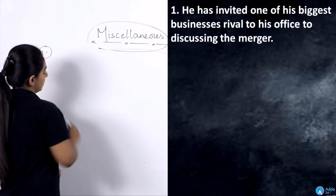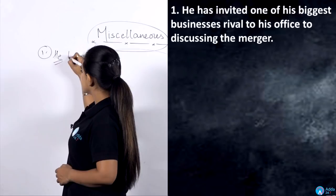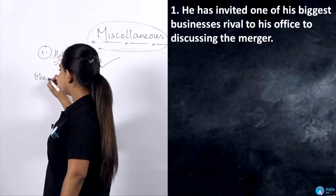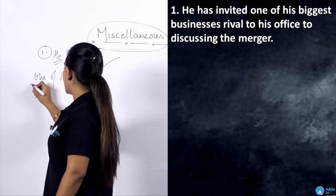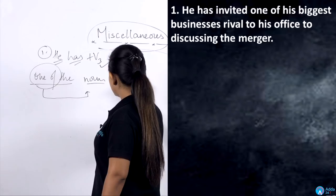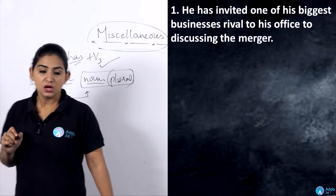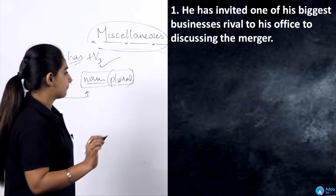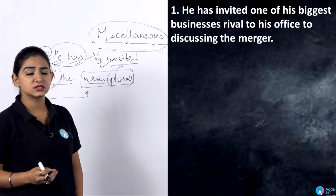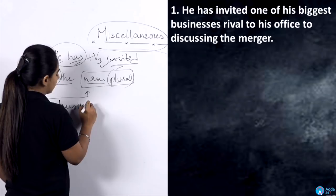Let's go to the first question on screen. We started with 'he' — he is singular. 'He' uses 'has,' which is also singular. With 'has,' the third form of the verb is used — here 'invited' is given, which is absolutely correct. Second, when we have 'one of the,' the noun used after it should be in plural form. Here 'businesses' is written — but can you invite businesses? Obviously not.